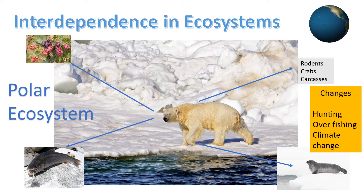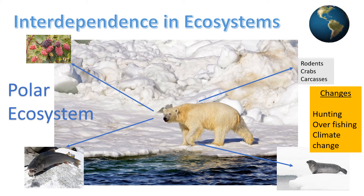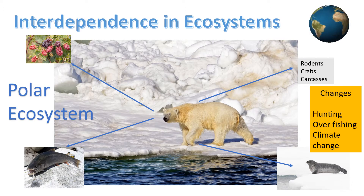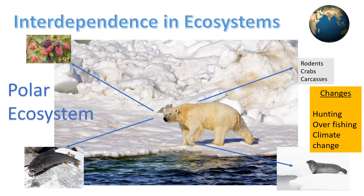If there is a change in the numbers of fish due to overfishing, or a decline in the number of seals from over-hunting, this will directly affect the polar bear's chance of survival because it is interdependent upon these food sources. Furthermore, with climate change and the decreasing amount of abiotic ice available each year, polar bears are going to start to struggle to breed or hunt, increasing their steps towards extinction.